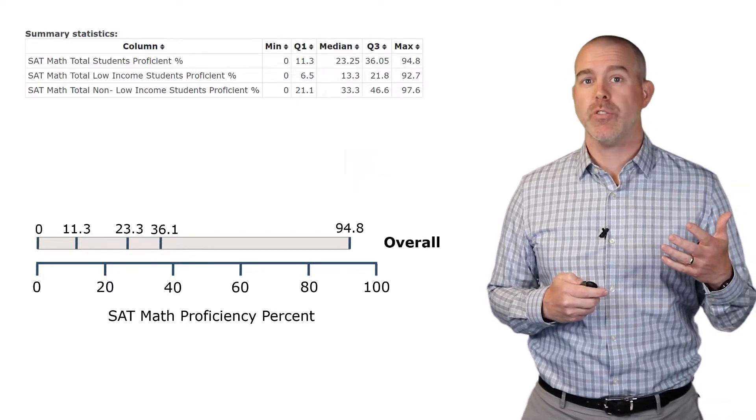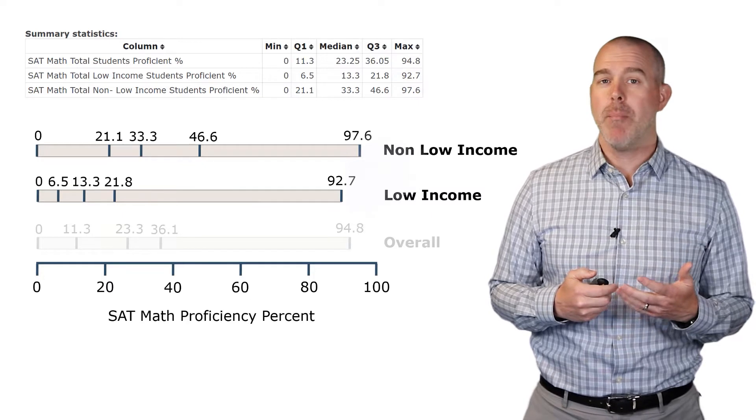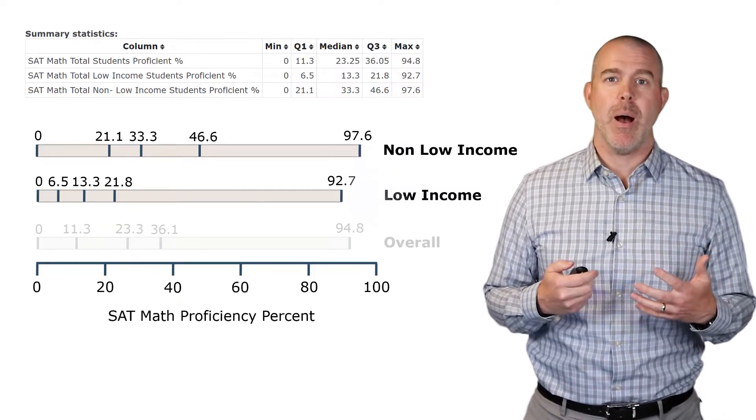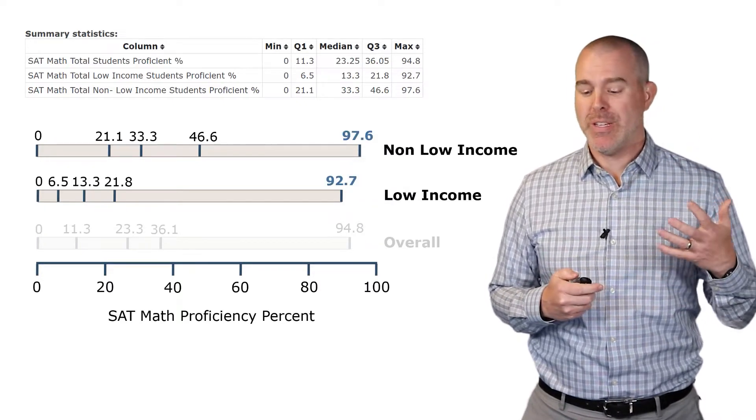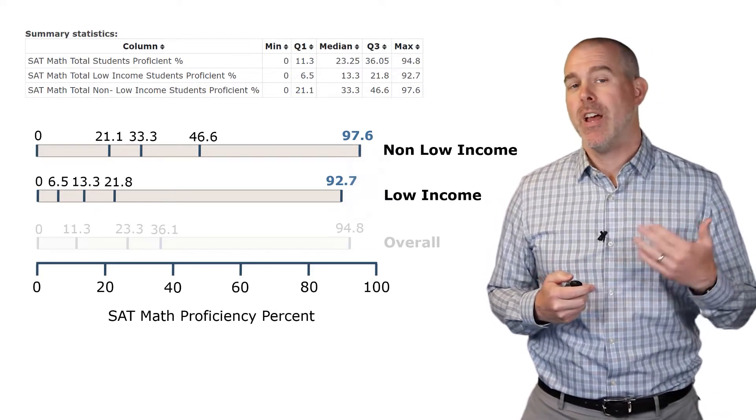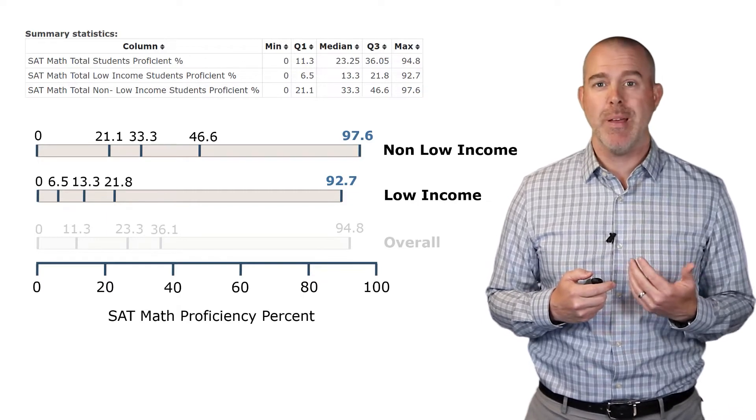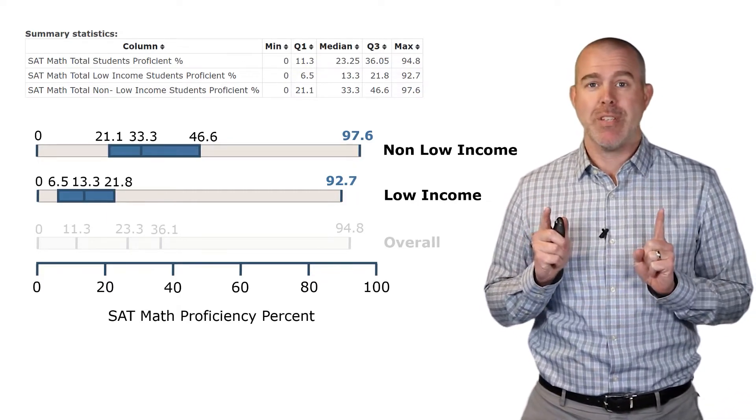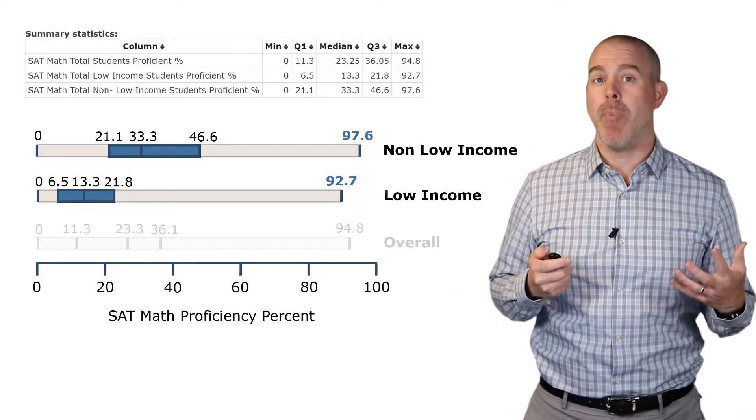So we have this overall distribution, and we also had a similar distribution for those who are non-low income and those who are low income at each school. We've previously talked about the comparison between these two. They have similar maximums. For the non-low income students, the maximum percent proficient was 97.6, versus for the low income students it was only 92.7. But if you look at the middle 50 percent between the first and third quartile, they are markedly different.